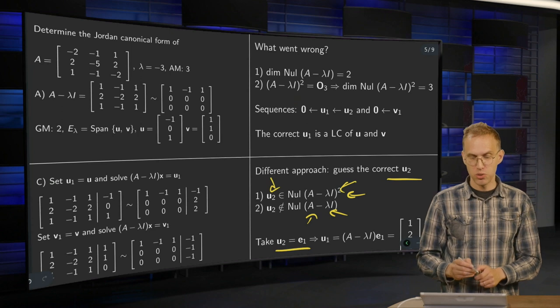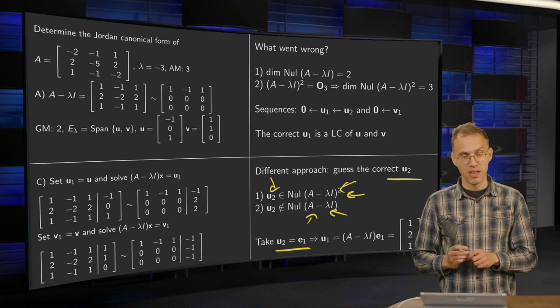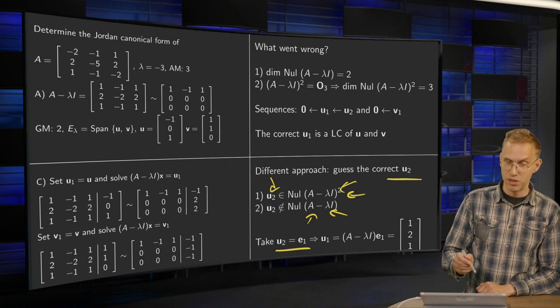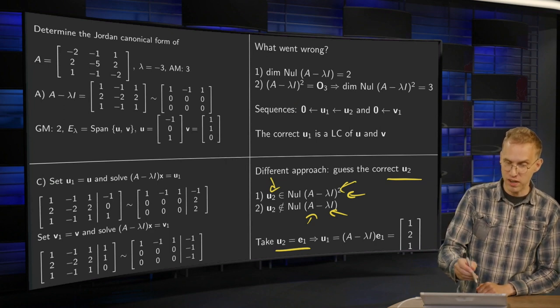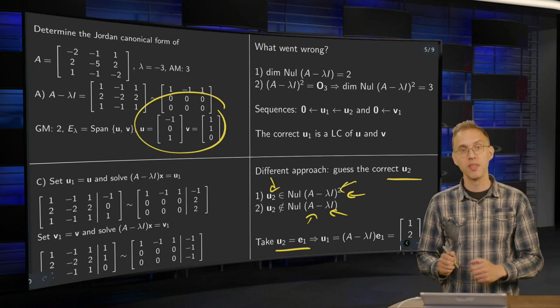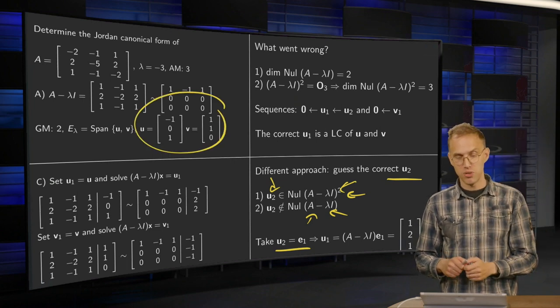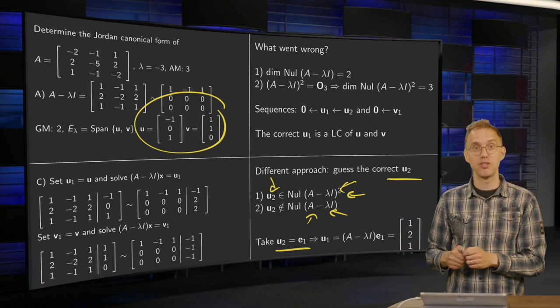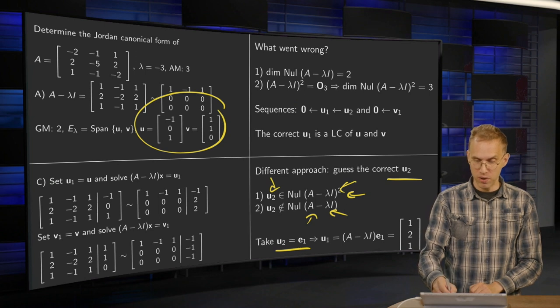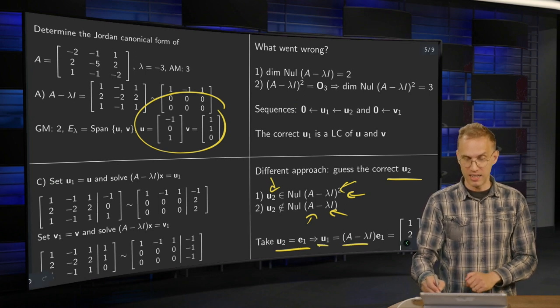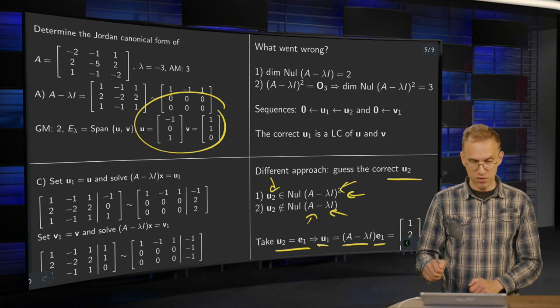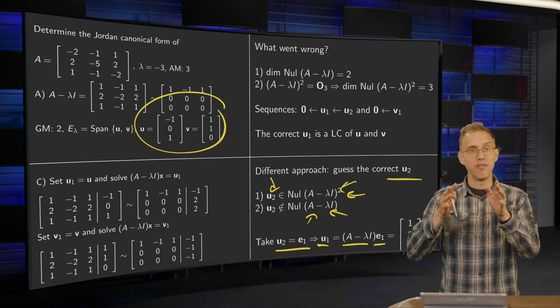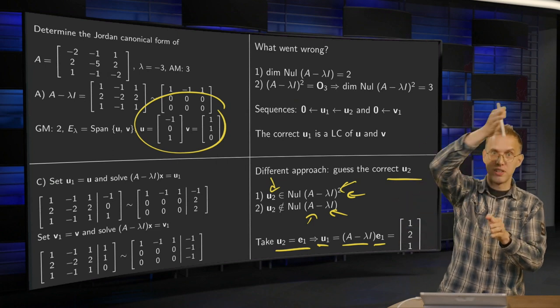Now any vector is of course in this null space over here. So this first condition is easy. And we say well let's take u_2 is just [1,0,0]. [1,0,0] is not an eigenvector of the matrix. So condition 2 is satisfied. [1,0,0] is not a linear combination of these two over here. So let's pick u_2 equals [1,0,0]. And then we can step down because we have the endpoint of our cycle. So u_1 equals (A minus lambda I) times u_2, which gives us [1,2,1].